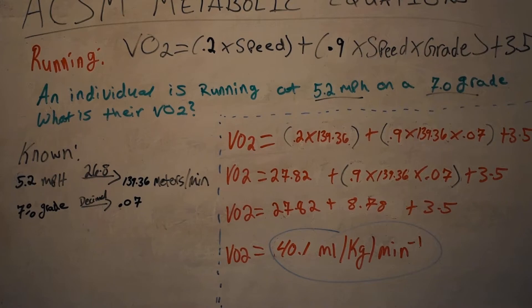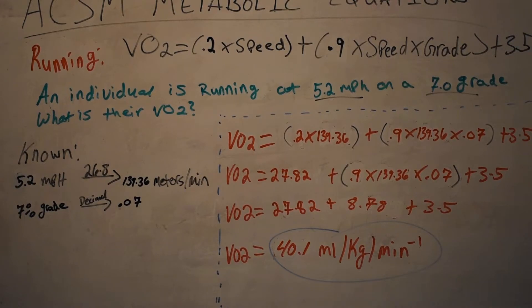If you recall, the walking equation had the same exact setup. The only thing that was different was that this was a 0.1 and this was a 1.8. That's the only thing that has changed in the running equation.